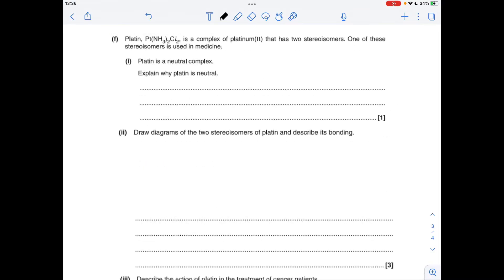Moving on to part F, we've got to explain why platinum is neutral. We've got the formula of platinum here. We've got platinum in its +2 oxidation state, we can tell that from that Roman numeral two there. The two ammonia ligands, they're both neutral, but the chloride ligands are -1 each. So -1 -1. So you can see the overall charge therefore is neutral.